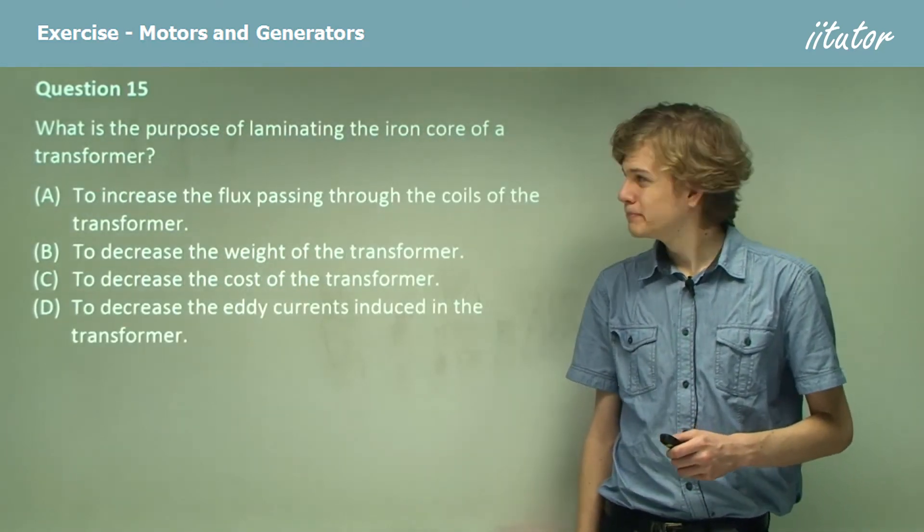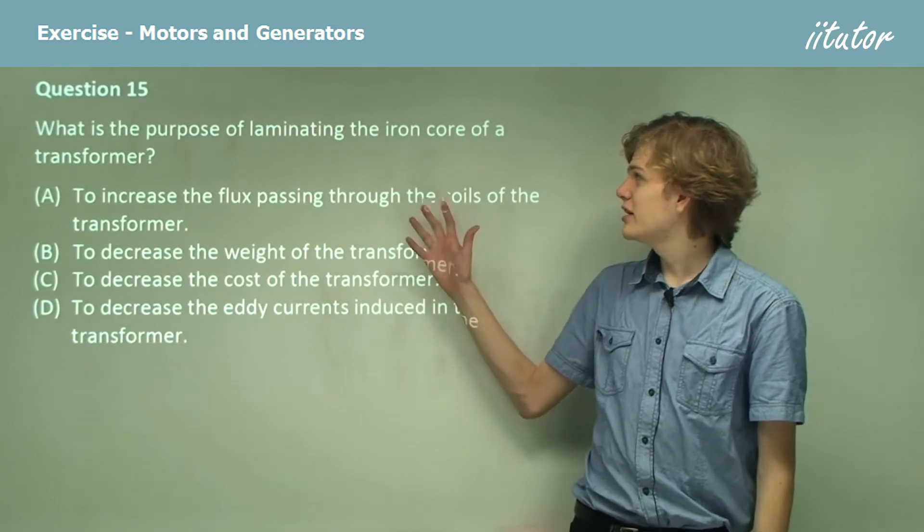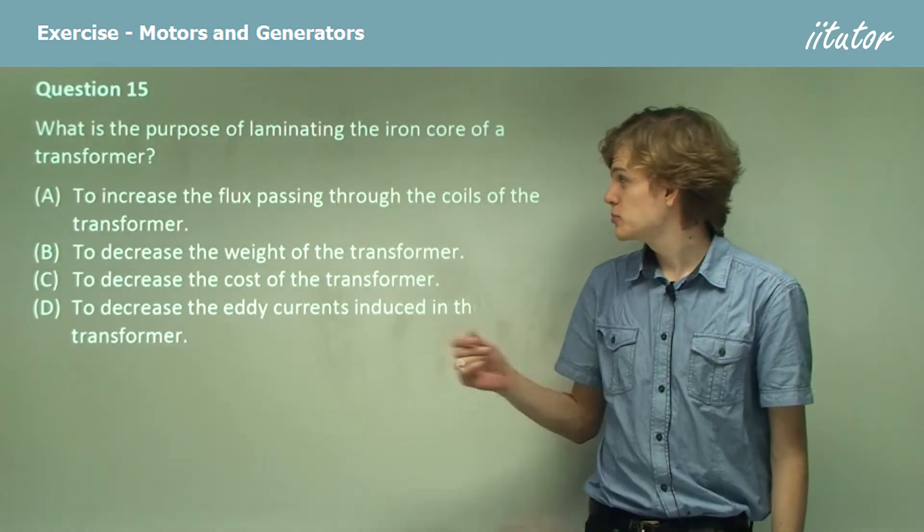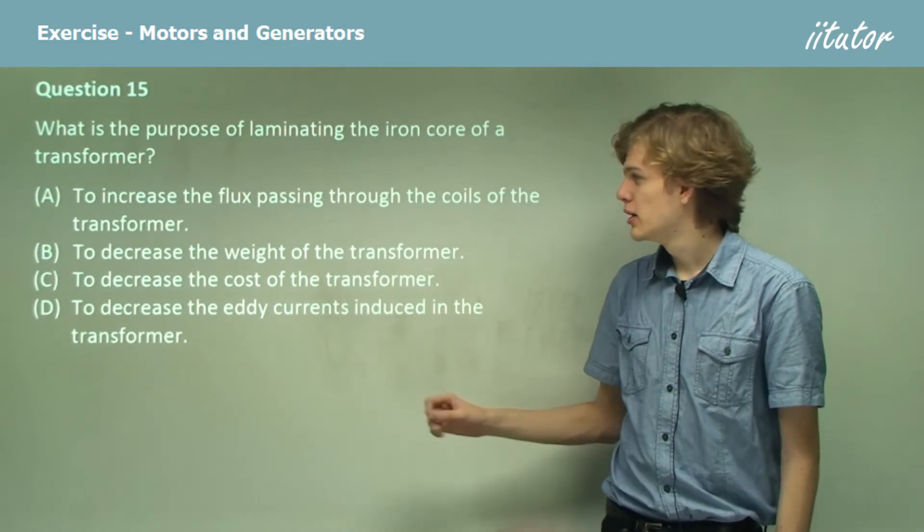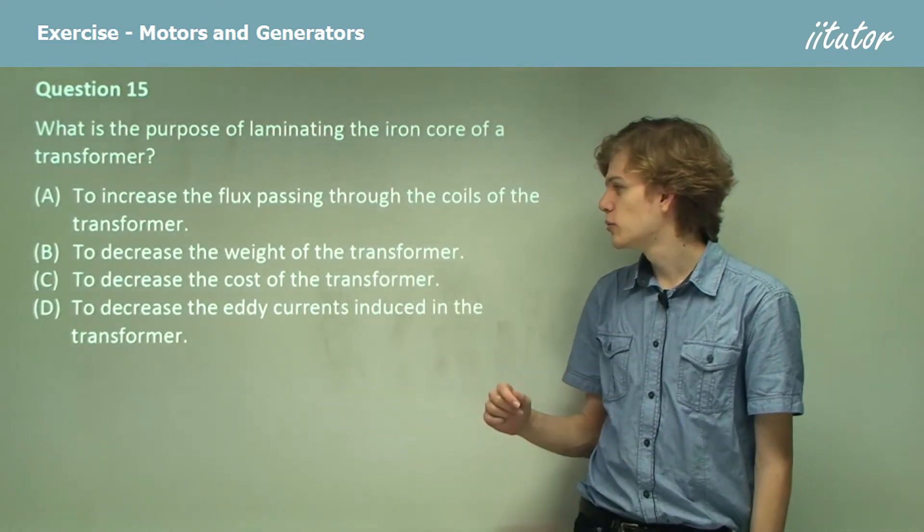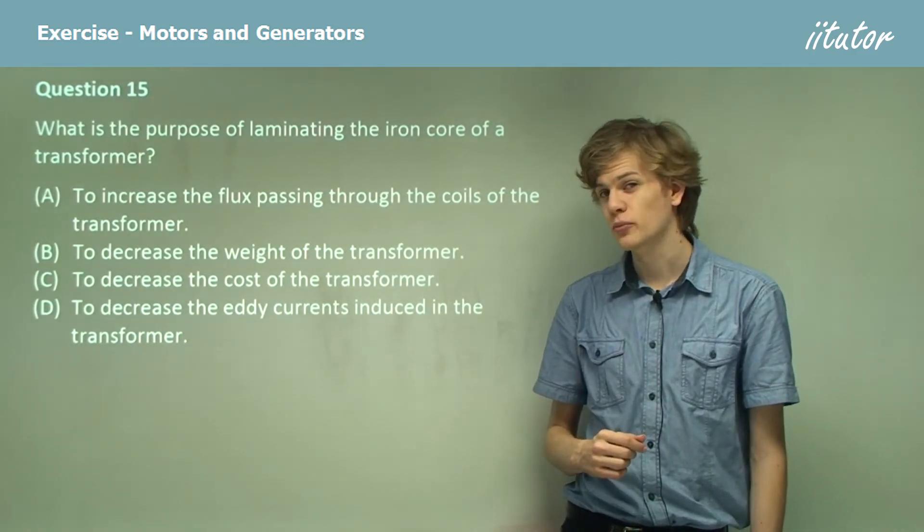Question 15. What is the purpose of laminating the iron core of a transformer? Is it to increase the flux passing through the coils of the transformer? To decrease the weight of the transformer? To decrease the cost of the transformer? Or to decrease the eddy currents induced in the transformer?